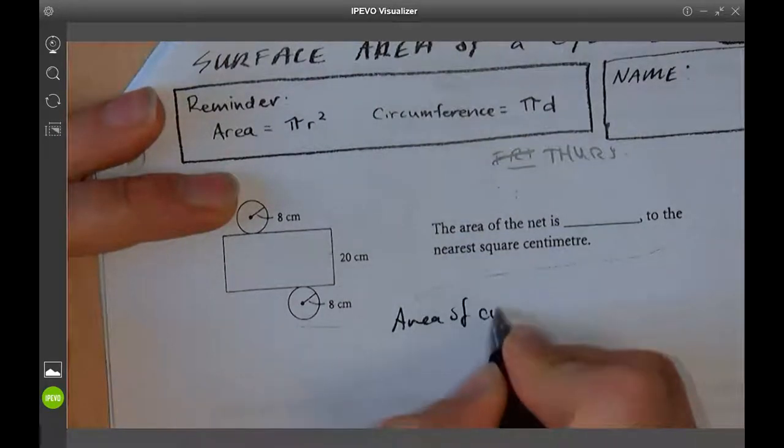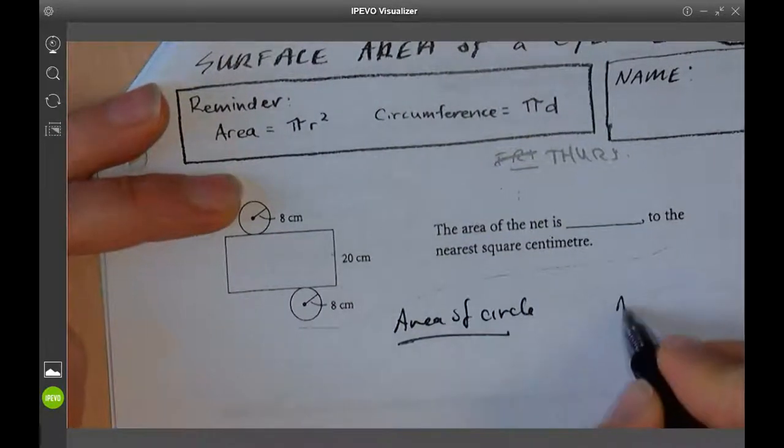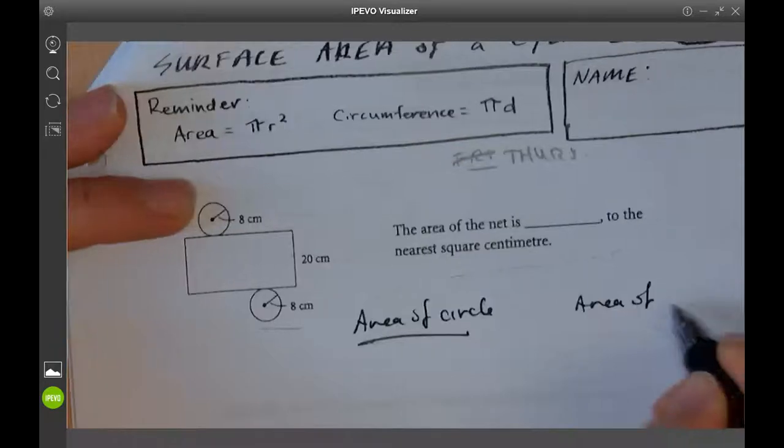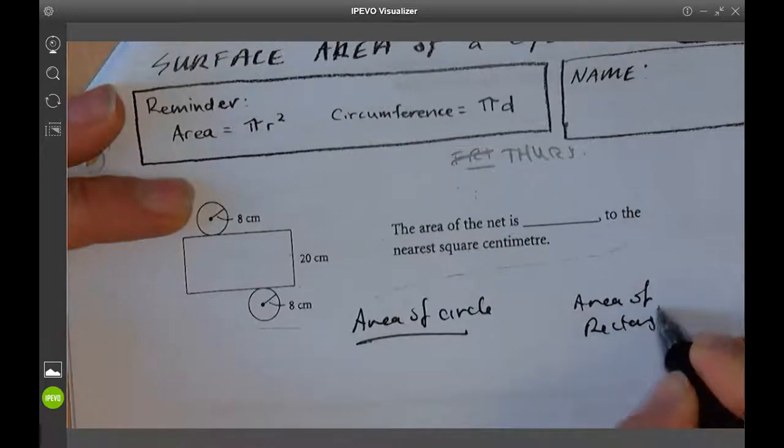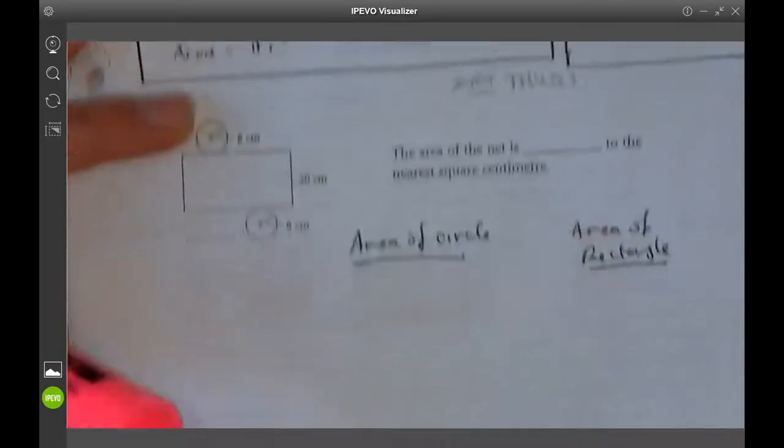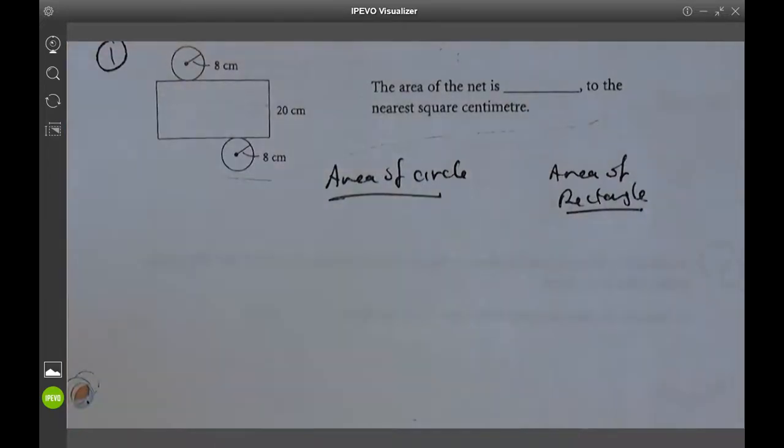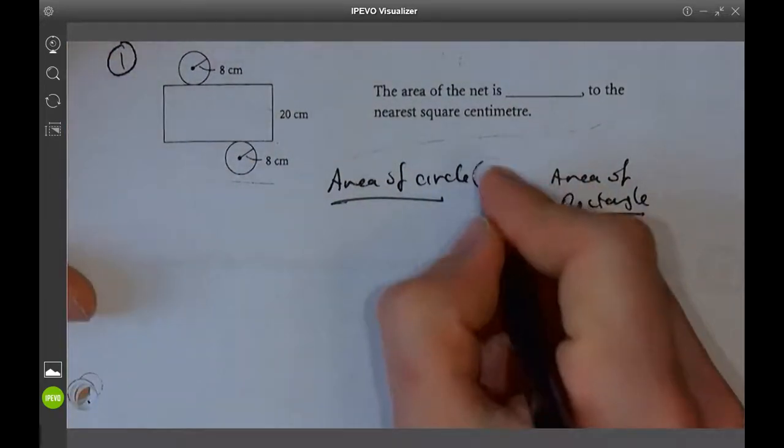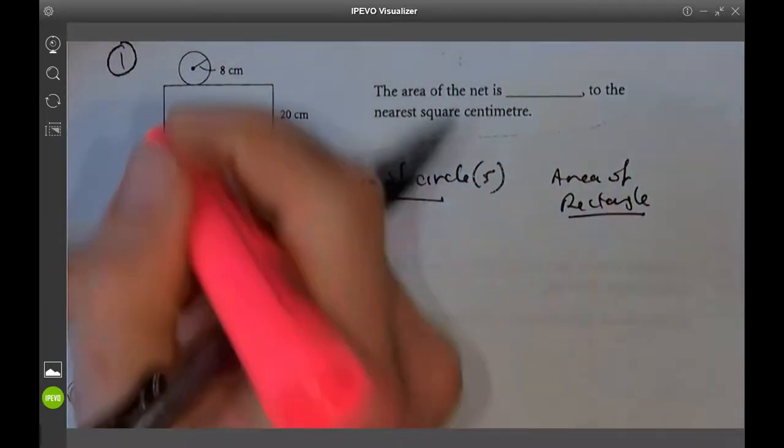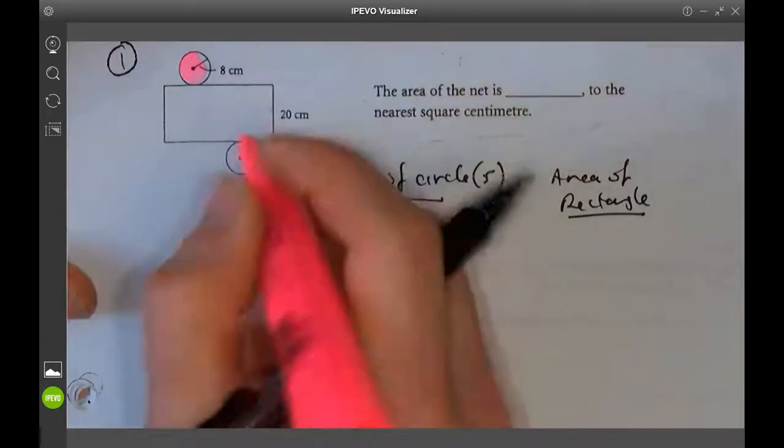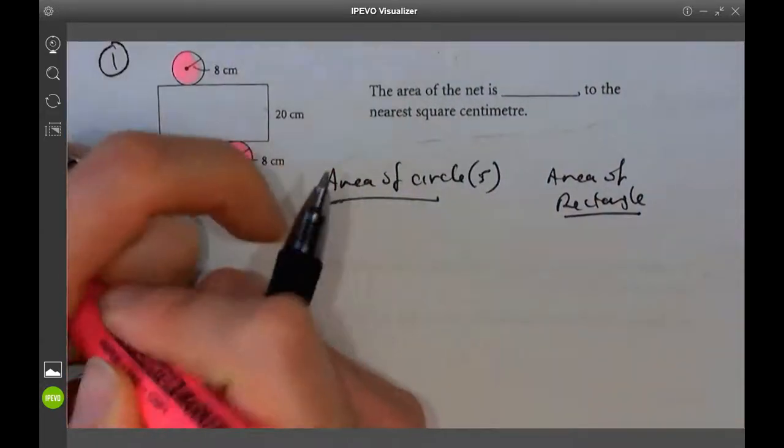Area of circle, area of rectangle. Okay, so let's just move this up. Area of circle - I should put circles, two circles. There's one, there's another. So these two circles, how do you find an area of a circle?